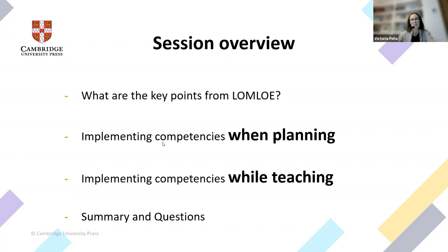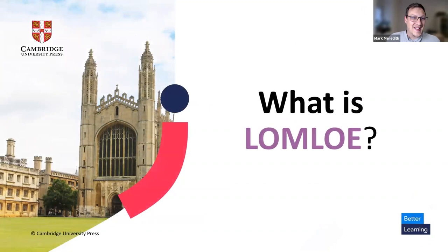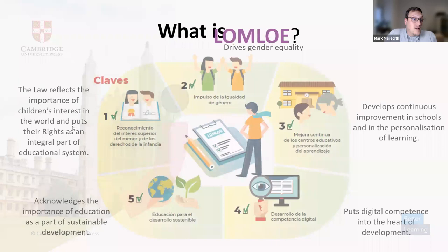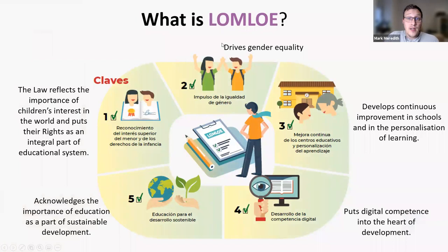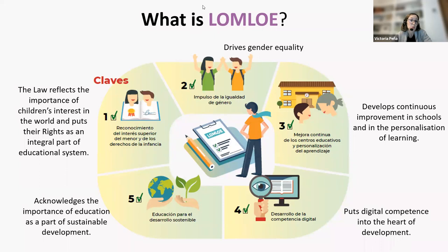So what is LOMLOE? At the highest level, LOMLOE is an objective that comes from the European Union. We're trying to make sure we are reflecting children's interests in the world and putting their rights as an integral part of the education system. The law in Spain is being brought more in line with European law, reflecting the importance of children's interests and rights as an integral part of the educational system.